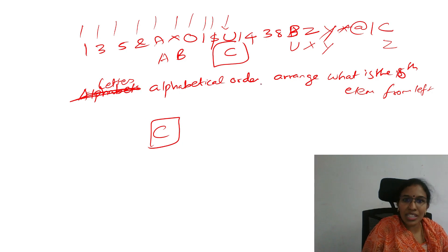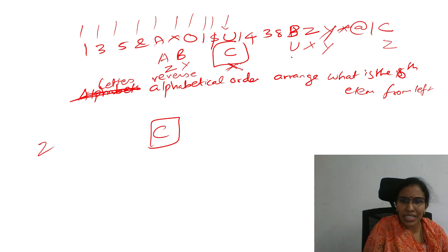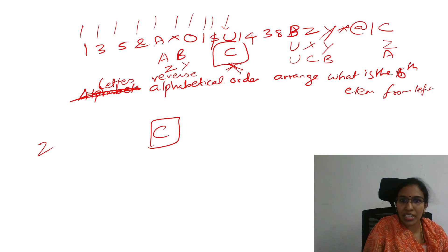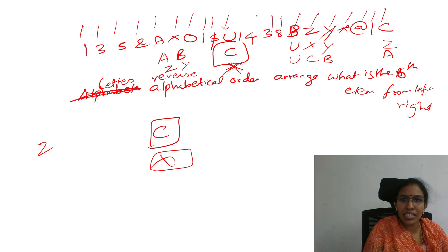Sometimes, let us arrange the alphabetical order in reverse. We will say reverse alphabetical order — Z first, then Y, then X, then U, then C, then B, then A. So what is the 10th element from left? X. What is the 10th element from right? Counting: 1, 2, 3, 5, 7, 8, 9, 10 — the element already is 4. So the answer is 4.